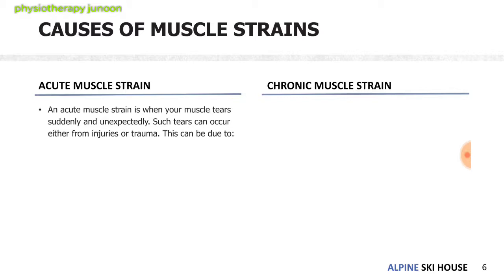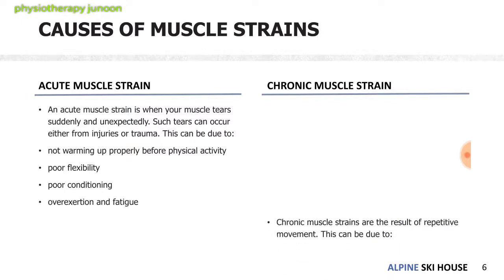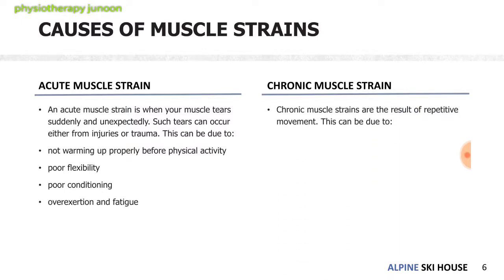Acute muscle strain is when your muscle tears suddenly and unexpectedly. Such a tear can occur due to injury or trauma, not warming up properly before physical activity, or poor flexibility where your muscles are tighter and stretching may lead to strain.